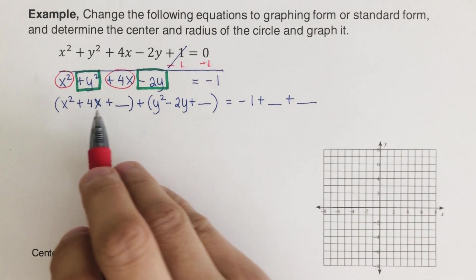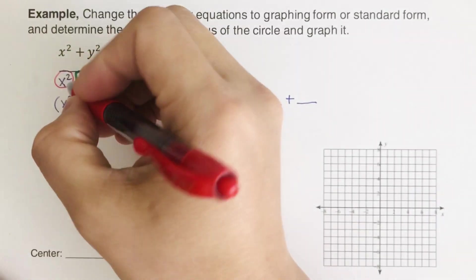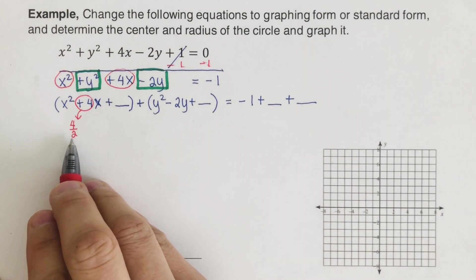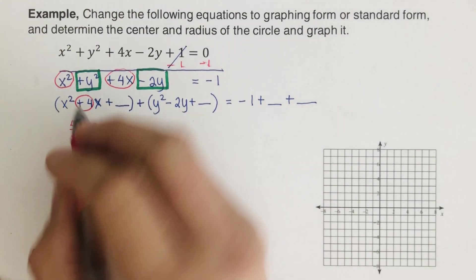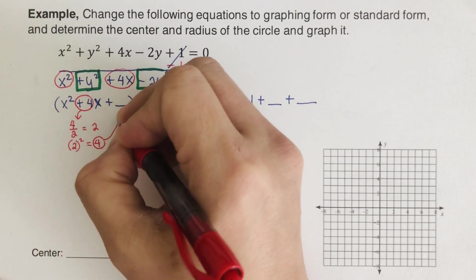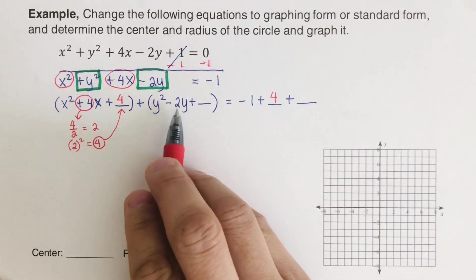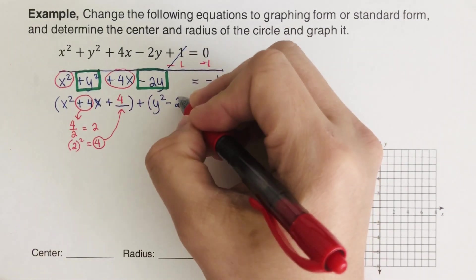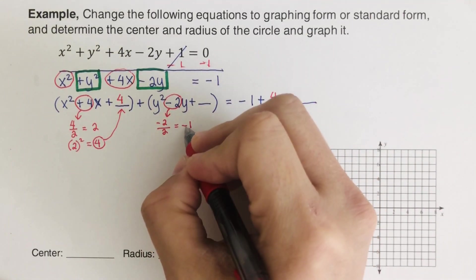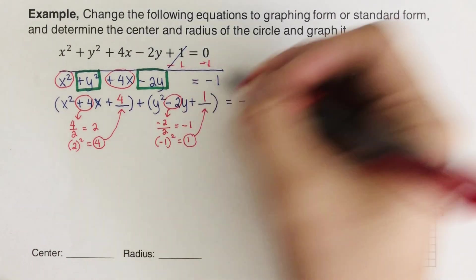Now we determine what numbers go in those blanks by completing the square. For the x group, we take the coefficient 4, divide by 2 to get 2, then square it: 2 squared equals 4. So we put 4 in the x blank, and 4 on the right side as well. For the y group, we take negative 2, divide by 2 to get negative 1, then square it: negative 1 squared equals positive 1. So we put 1 in the y blank and also add 1 to the right side.